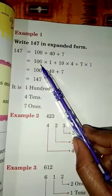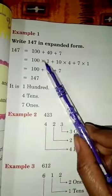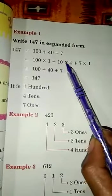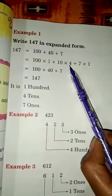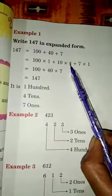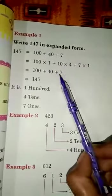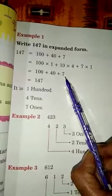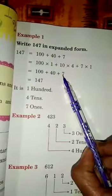So next, what we will do? 100 into 1 equal to 100. 10 into 4 equal to 40. 10 fours are 40. And 7 into 1 equal to 7. Then we will add it. 100 plus 40 plus 7.